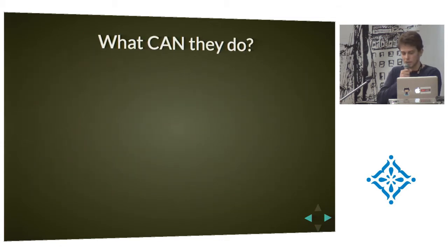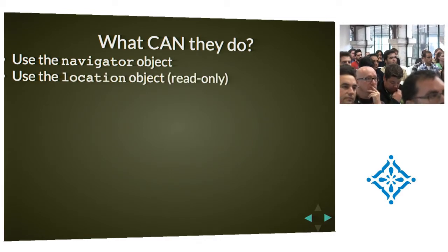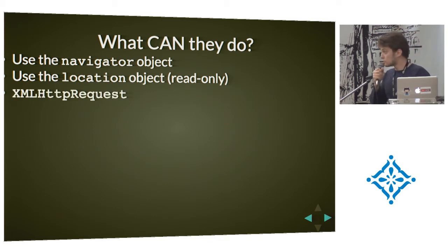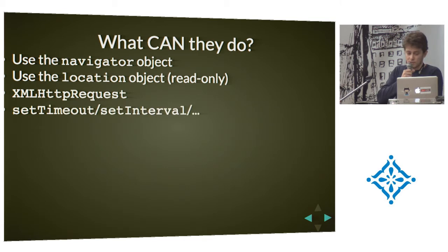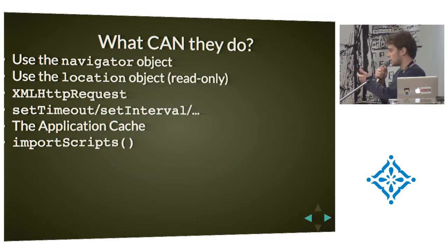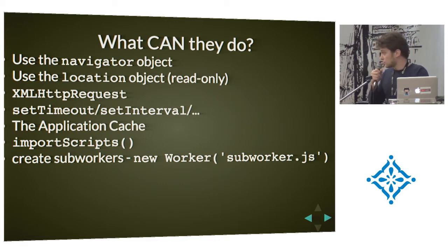What can web workers do? They can read properties from the browser using the navigator object. They can use the location, but only in a read-only way — they cannot change the address. They can make AJAX requests, use timeouts and intervals, the usual stuff. They can use the application cache, which might be useful. They can also load other scripts using a global function called importScripts, where you pass it the path to the scripts you want to use. And they can create sub-workers, though you can't pass a full path to a new worker from inside another worker.